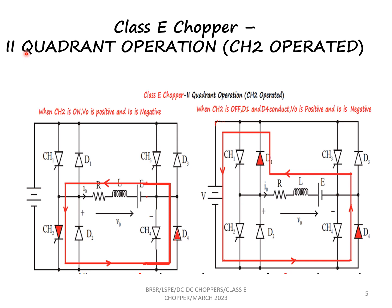Let us now see the second quadrant operation of the class E chopper. CH2 is operated. When CH2 is kept on, the current flow in the circuit is from the load through CH2 and D4, in the anti-clockwise direction. When CH2 is kept off, the current flows through D4 and D1 back to the source. In this case, voltage is positive and current is negative, which explains the second quadrant operation.